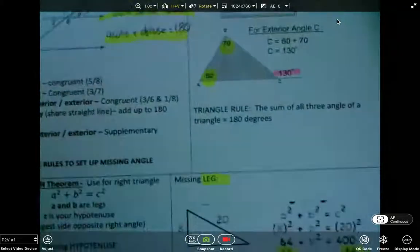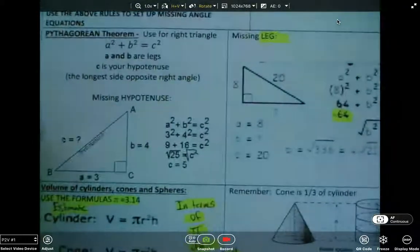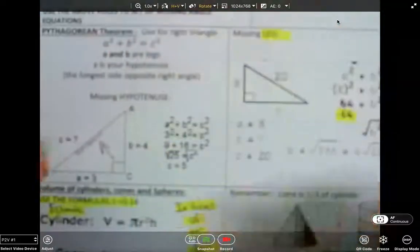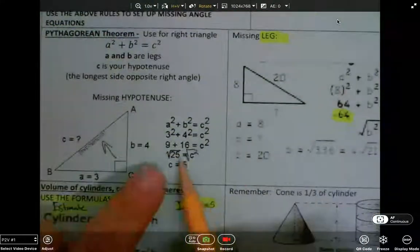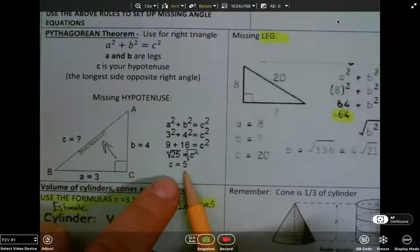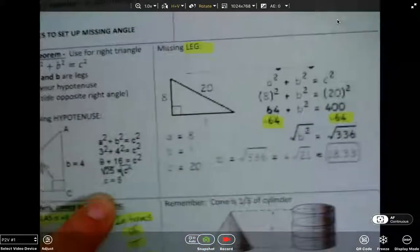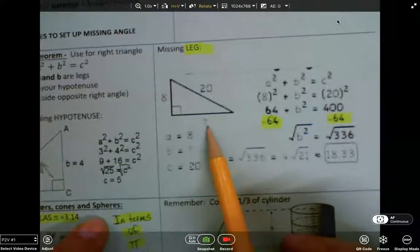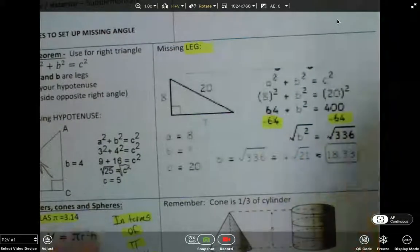And we learned about Pythagorean theorem. Everyone liked that. A squared plus B squared equals C squared. Remember, your longest side is the hypotenuse C. And at the end, you always have to square root both sides to find your missing side length. And also, don't forget here, when you're finding a missing leg, like here, this is B. You had to subtract on both sides.